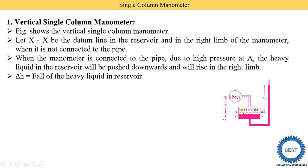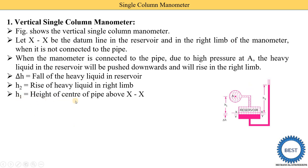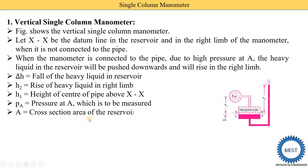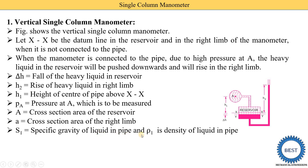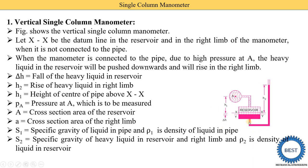Delta H is the fall of heavy liquid in the reservoir, measured from X-X downward. H2 is the rise of heavy liquid in the right limb above X-X. H1 is the height of the center of the pipe above X-X. PA is the pressure at point A to be measured. Capital A is the cross-sectional area of the reservoir, small a is the cross-sectional area of the right limb. S1 and rho1 are the specific gravity and density of liquid in the pipe; S2 and rho2 are the specific gravity and density of heavy liquid in the reservoir and right limb.